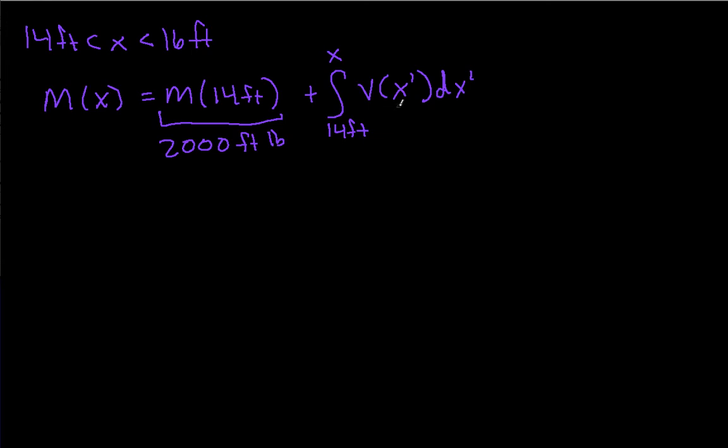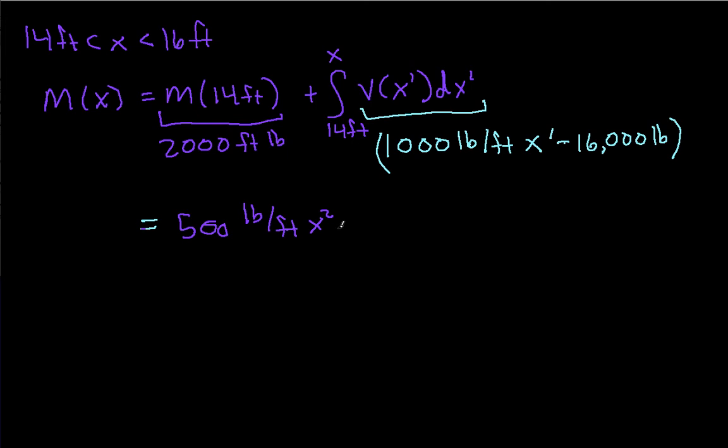This v of x prime is 1,000 pounds per foot times x prime minus 16,000 pounds. So that's what I'm integrating here. This is in the integral. And so I work this all out and I get that m of x is 500 pounds per foot x squared minus 16,000 pounds times x